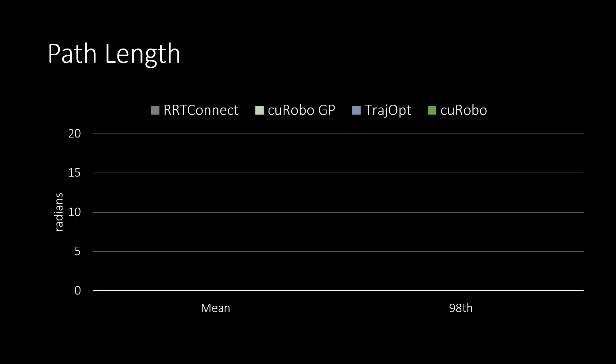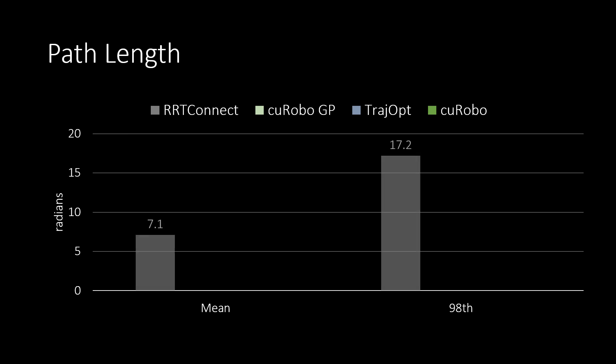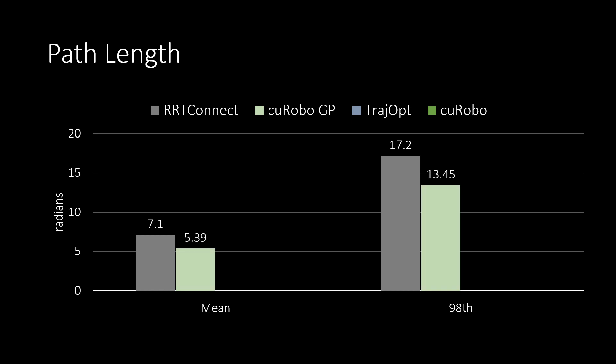We next look at some metrics starting with path length in joint configuration space. We compare the path length with RRT Connect implementation from OMPL and also with TrajOpt implementation from Tesseract. We first see that RRT Connect's path length is seven radians on average, while Kurobo's geometric planner reduces it to 5.39 radians on average. TrajOpt is able to obtain an even lower path length of 3.67 radians leveraging numerical optimization.